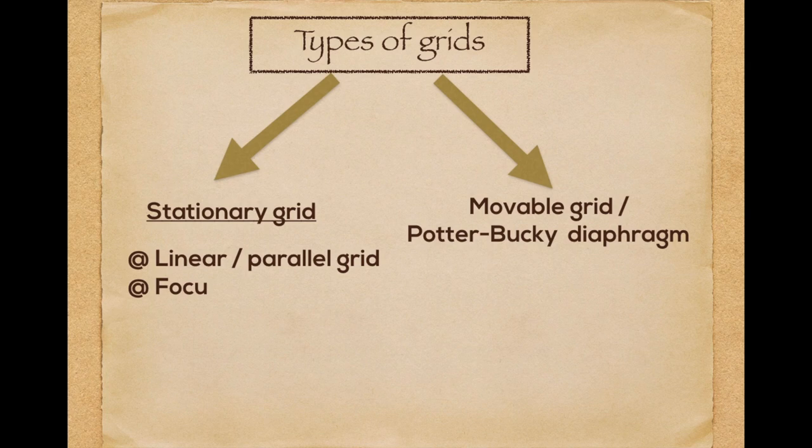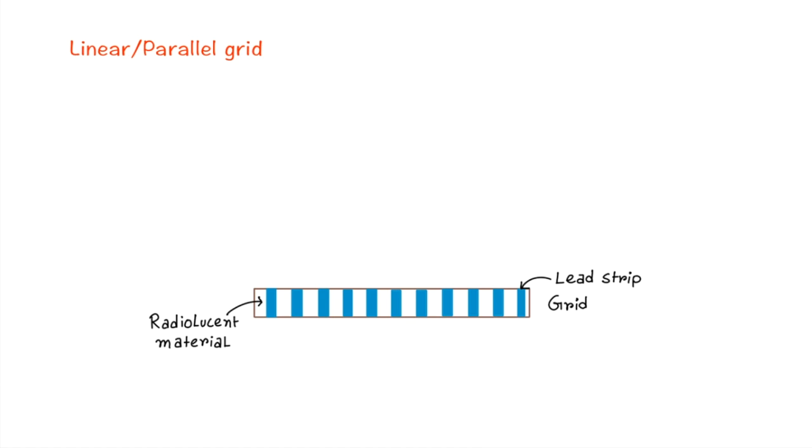Stationary grids are of four types: linear or parallel grid, focused grid, pseudo-focused grid, and cross grid.